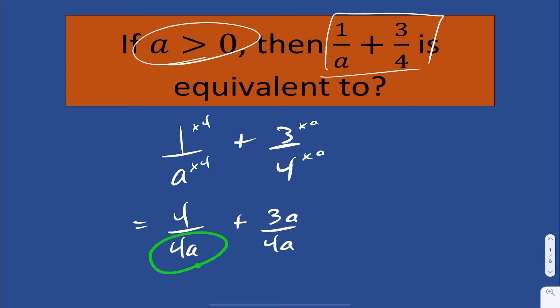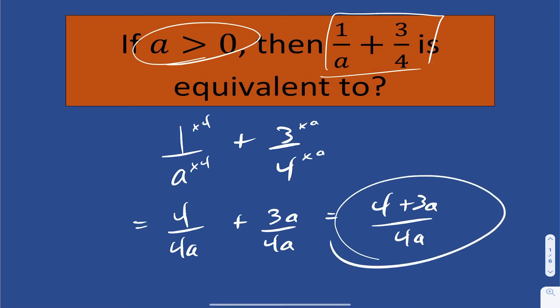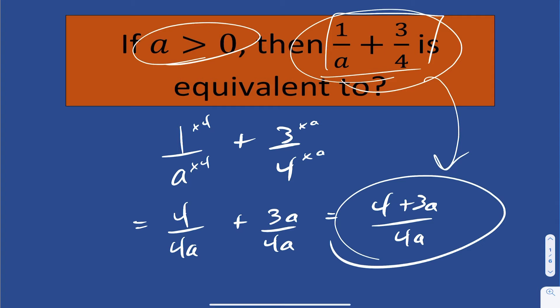Now we have a common denominator in the bottom, which means we can add the tops and perform the operation on them, in which case we get 4 plus 3a divided by 4a. So therefore 1 over a plus 3 over 4 is equivalent to 4 plus 3a, the entire expression, divided by 4a. Let's try another.